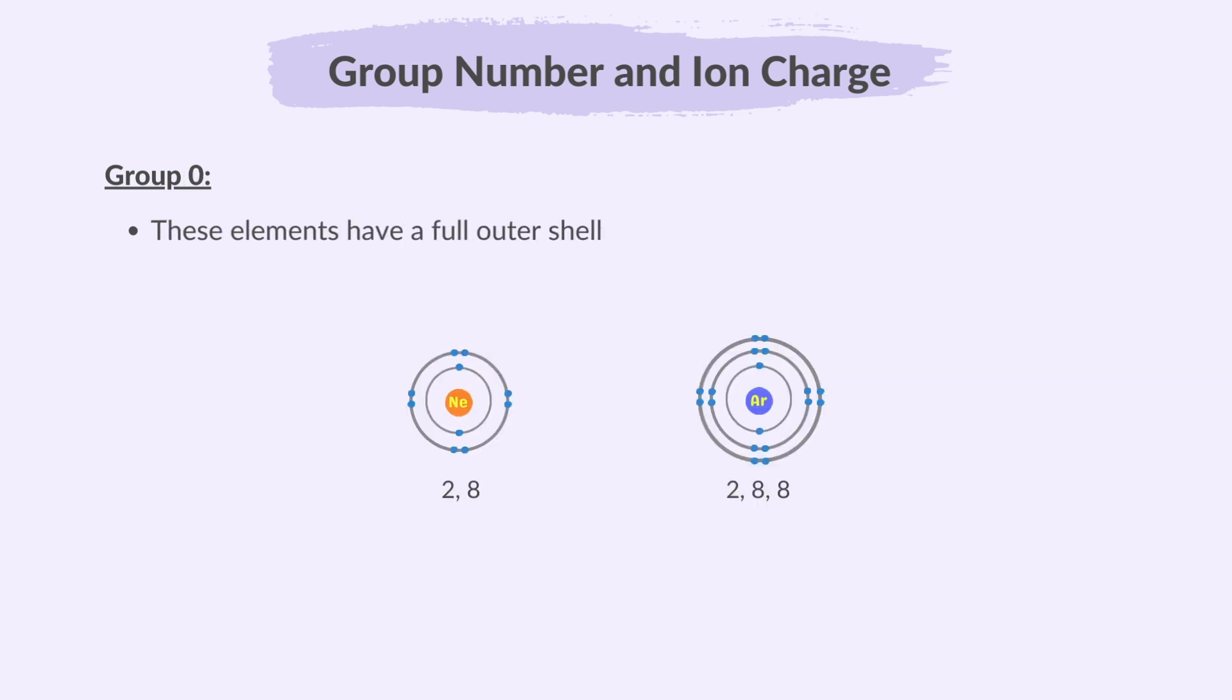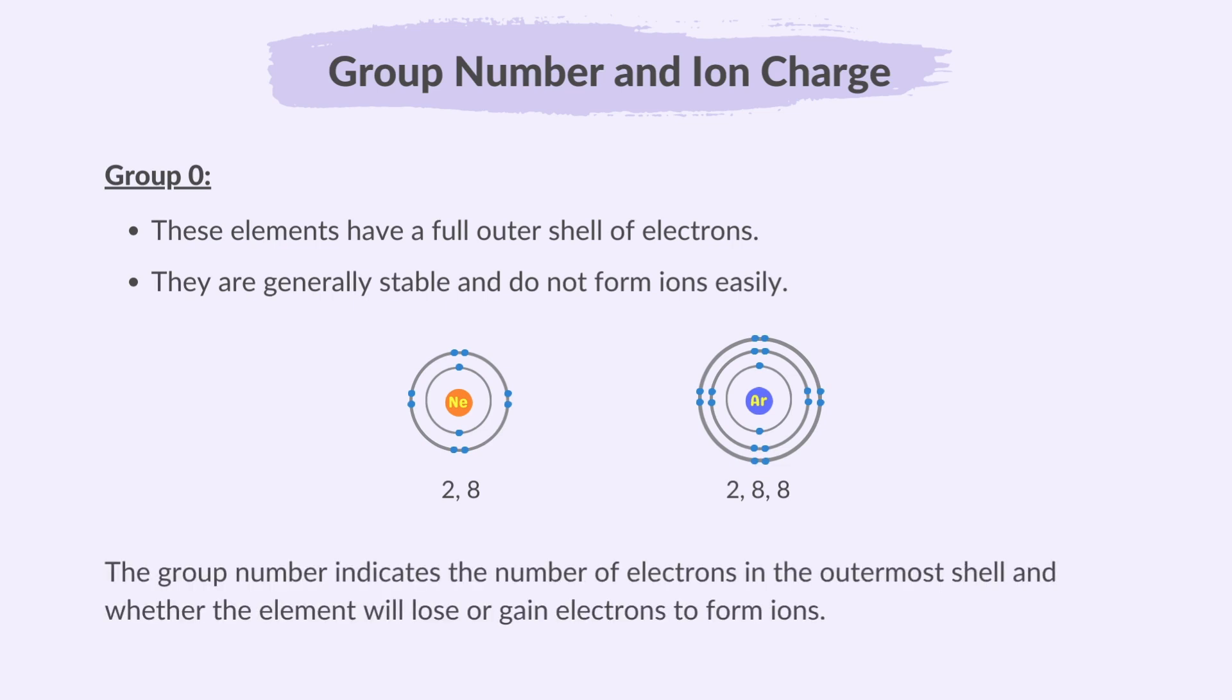In group 0, these elements have a full outer shell of electrons. They are generally stable and do not form ions easily. In summary, the group number indicates the number of electrons in the outermost shell and whether the element will lose or gain electrons to form ions.